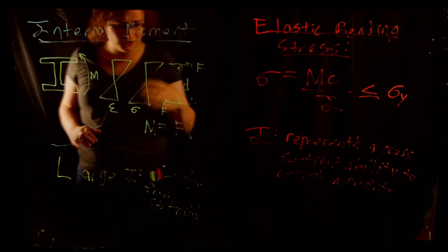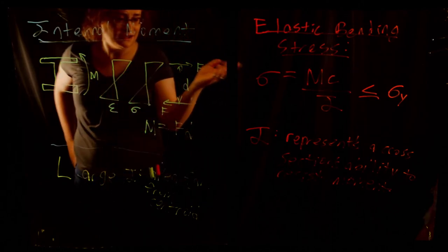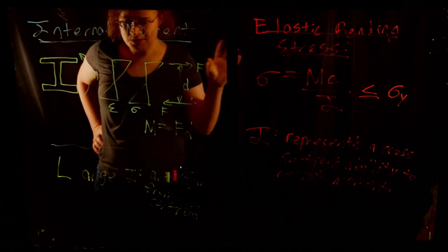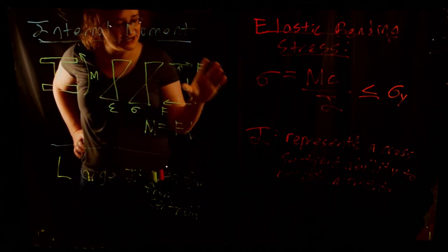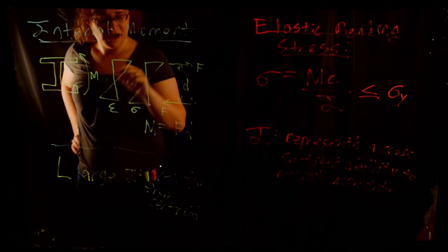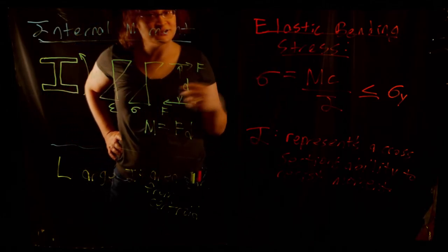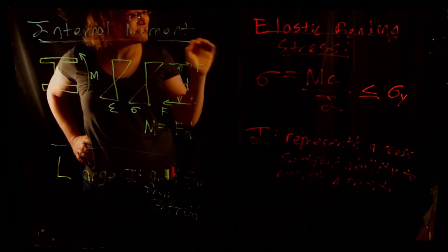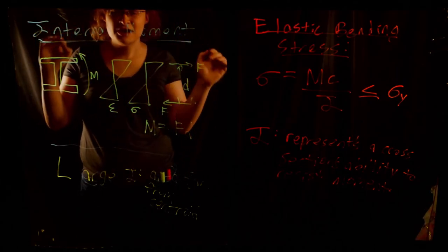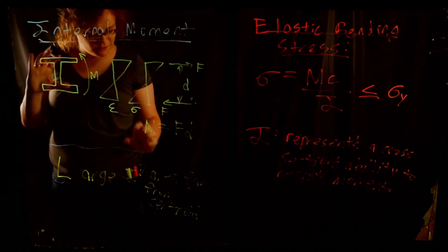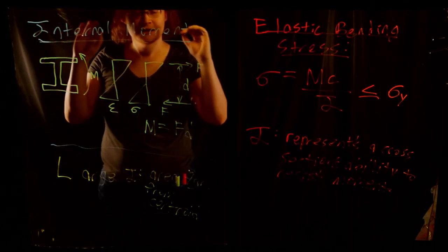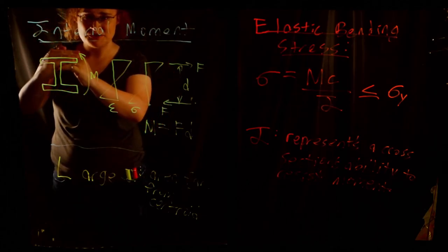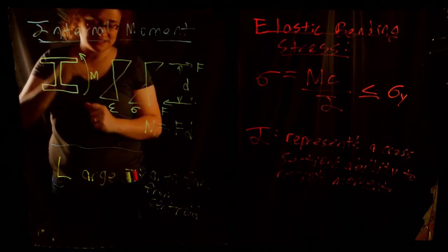You can review more mechanics if curious about calculating these properties. Be aware of how moment is carried internally — building from strain to stress to forces — and be aware that the moment of inertia represents a cross-section's ability to resist moment. To get a large moment of inertia, maximize the amount of area as far away from the centroid as possible.